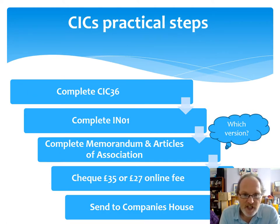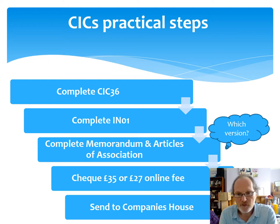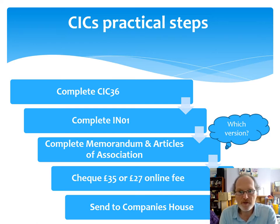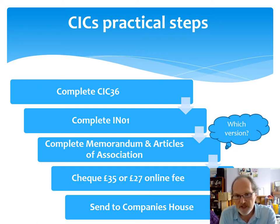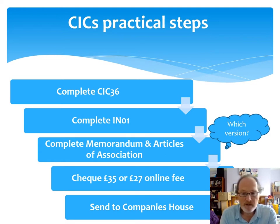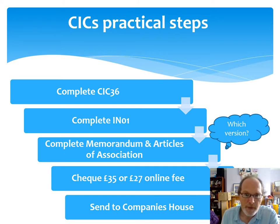There are about 14,000 to 15,000 CICs now on public record — a very strong and robust model. The process to form a CIC is: you complete what's called a CIC36 form that declares the community of interest, your activities, the benefits you bring to that community, plus what happens to profits and assets. You complete a Companies House IN01 form — a core company document setting out who owns the business, who are the directors, who are the people with significant control. You would complete the memorandum and articles of association; there are different models you can download on the CIC regulator's website covering shares, guarantee, and large or small membership. You can do this all online or send it on paper to Companies House, and you could be up and running in a few days if you're lucky.